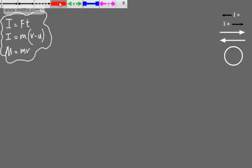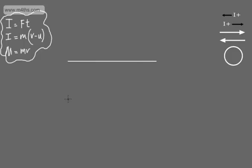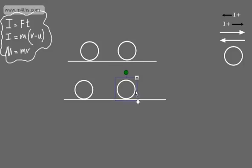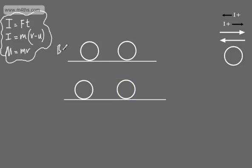What I'm going to do is take two particles, A and B, and put them on a smooth horizontal surface. We're going to have a collision between the two. Here is A and here is B. What I've got is a before shot, and below I'm going to have an after shot. So this is after the collision. I'm going to put some information on these. Before, we have A with mass MA and B with mass MB.